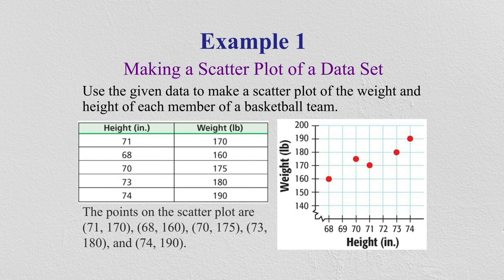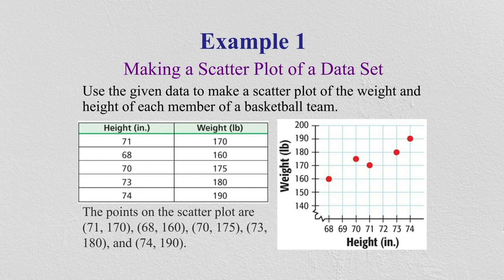The points on the scatter plot are: (71, 170), (68, 160), (70, 175), (73, 180), and (74, 190). The horizontal axis shows height and the vertical axis shows weight. So 71 and 170 is plotted as the first dot, then 68 and 160 as the second dot, then 70 and 175 between the two intervals, then 73 and 180, and finally 74 and 190. Now we have plotted all the scatter dots on the graph.